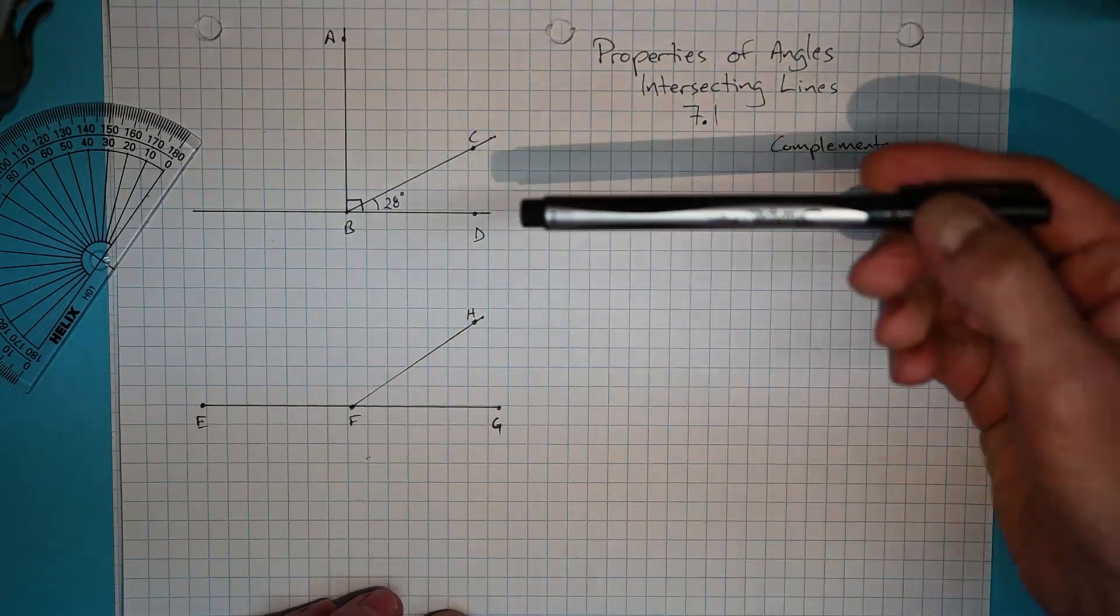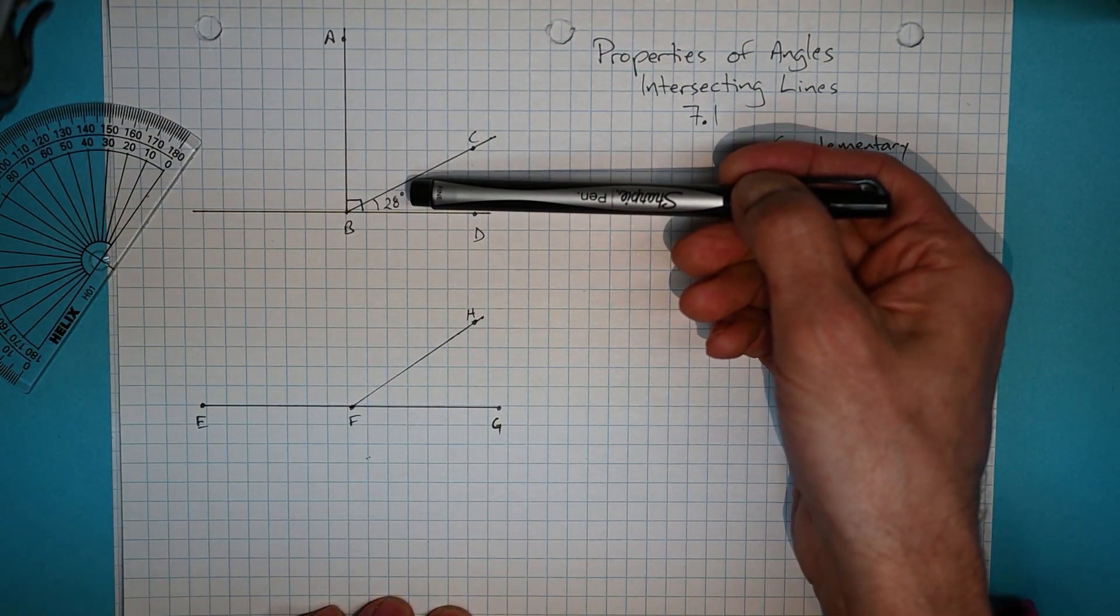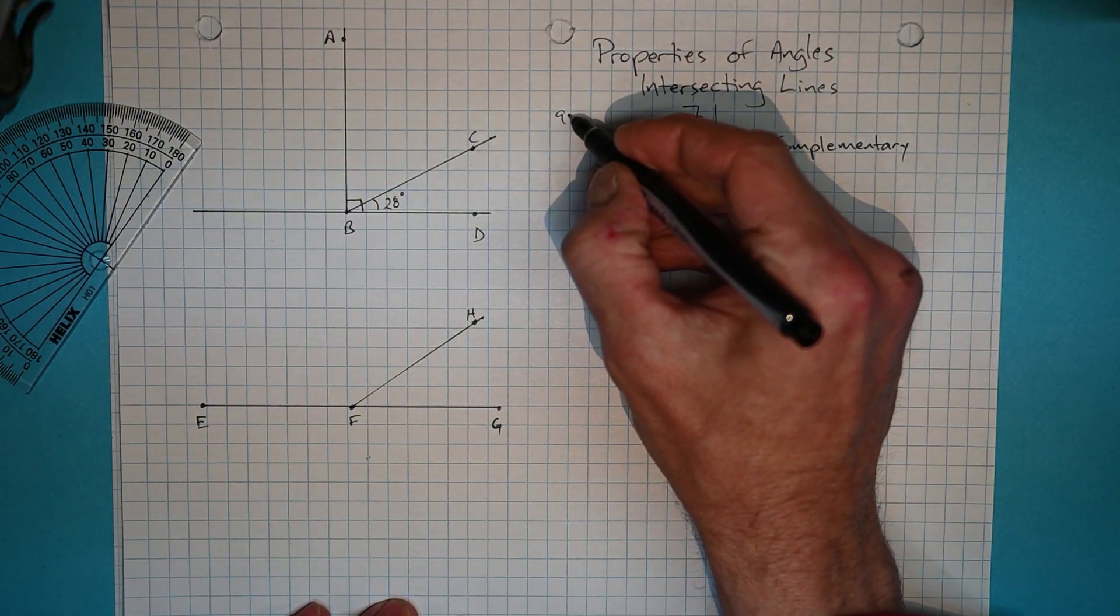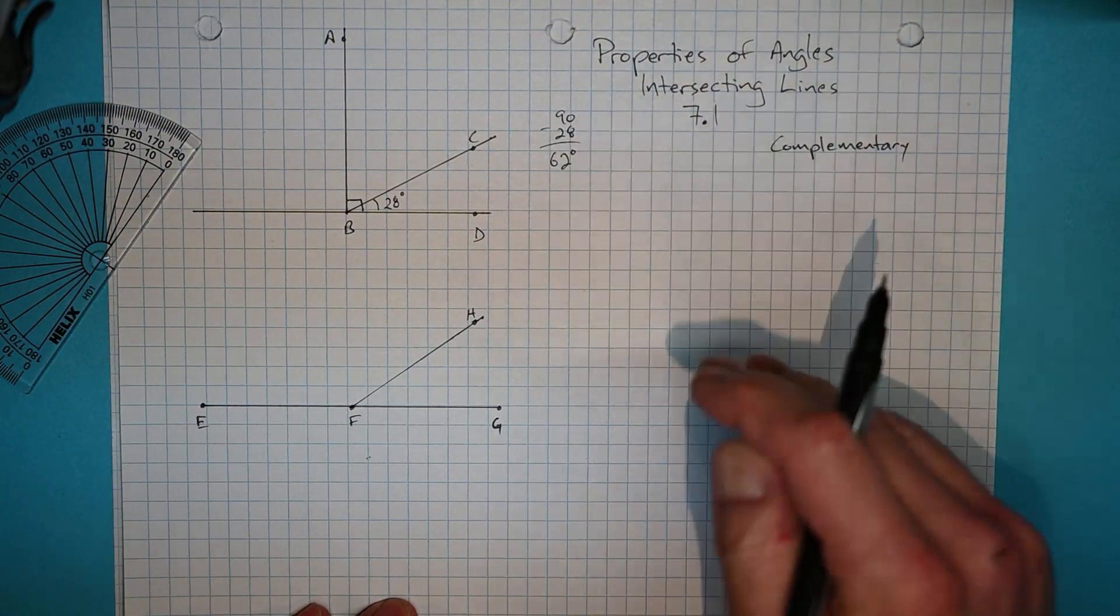So with complementary angles, when we know one, we can find the other just by subtracting it from 90 degrees. So you can quickly see that 90 minus 28 gives us the 62 degrees remaining.